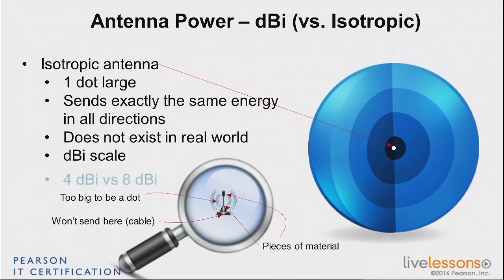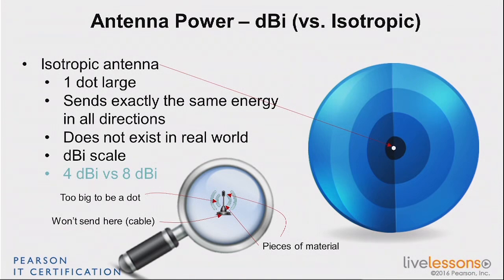So if you have an antenna that has 4 dBi and another one that has 8 dBi — we call that gain, and we'll come back to that more extensively — you can compare these two. Of course the isotropic doesn't exist, but you know that one of them is twice as powerful as the other, right? No, it's not, because it has 4 dB difference — remember, twice is 3 dB. That was the trap. 3 dB is twice. So if you go from 4 dBi to 7 dBi, that would have been twice as powerful. But because you go to 8, it's more than twice.